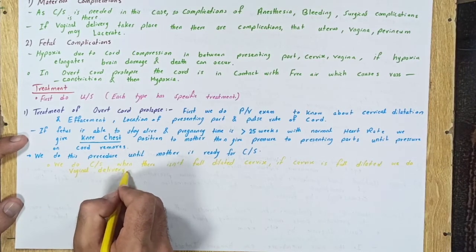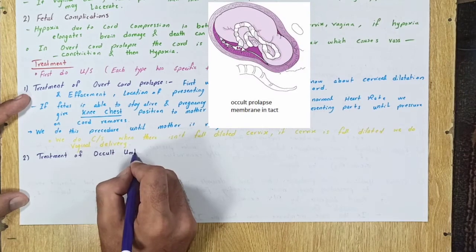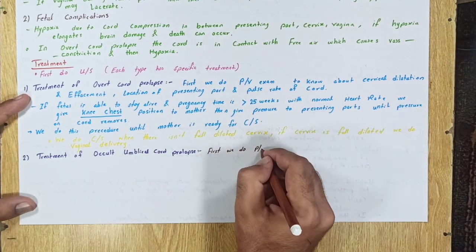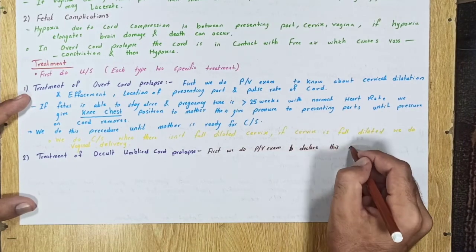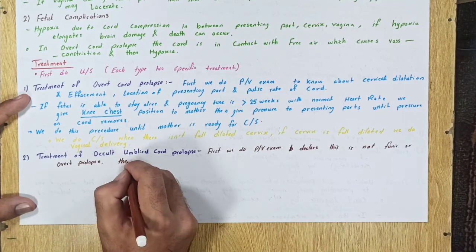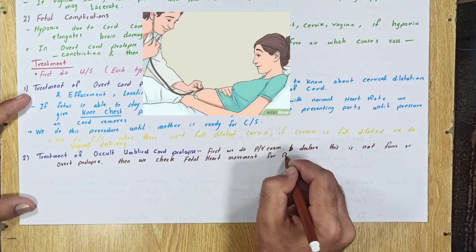Treatment of occult umbilical cord prolapse: First, we do pervaginal exam to declare this is not funic or overt prolapse. Then, we check fetal heart movement for bradycardia and variable deceleration.